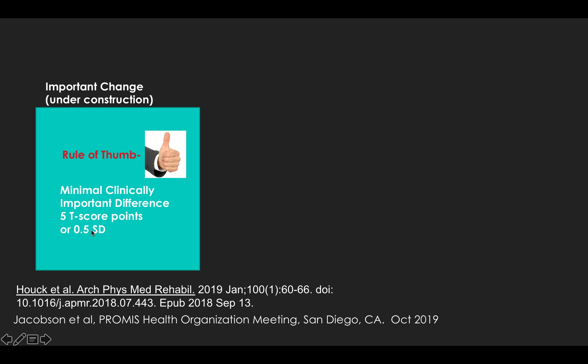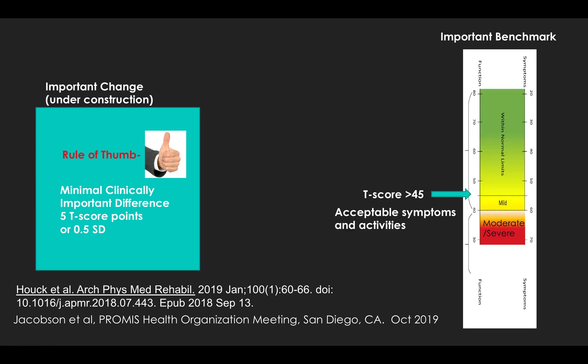A rule of thumb is about half a standard deviation, similar to other scales. We have identified a threshold of 45 as the level above which patients typically find their level of symptoms and activities acceptable, and below which they find them unacceptable. So a good target is to try to get patients to 45 when they have low self-efficacy to begin with.